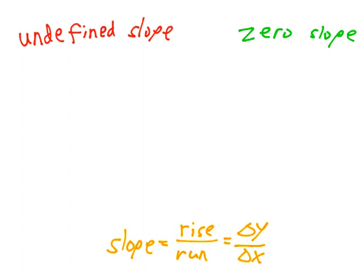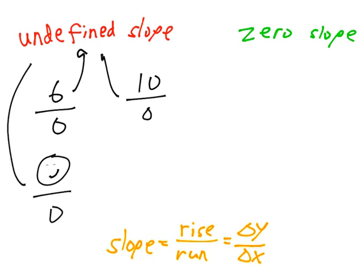Next point: undefined numbers are numbers that are divided by zero. So, 6 divided by zero is undefined. 10 divided by zero is undefined. Happy face divided by zero is undefined. Delta y divided by zero is undefined.